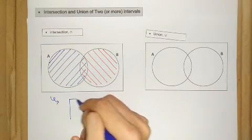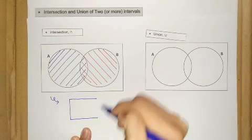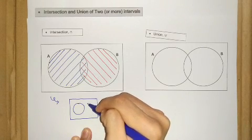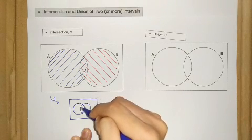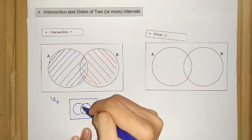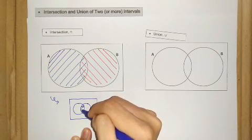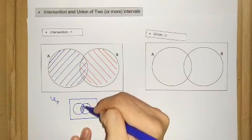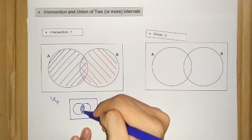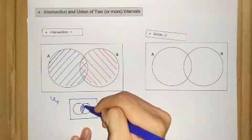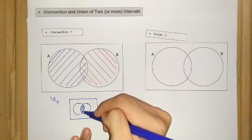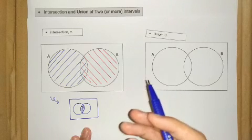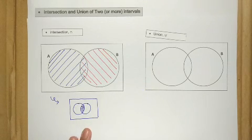We have set A and set B. The area that belongs to both set A and B is just this middle area. So the elements we consider for the intersection are just in this region — the concept is the elements that belong to both A and B.